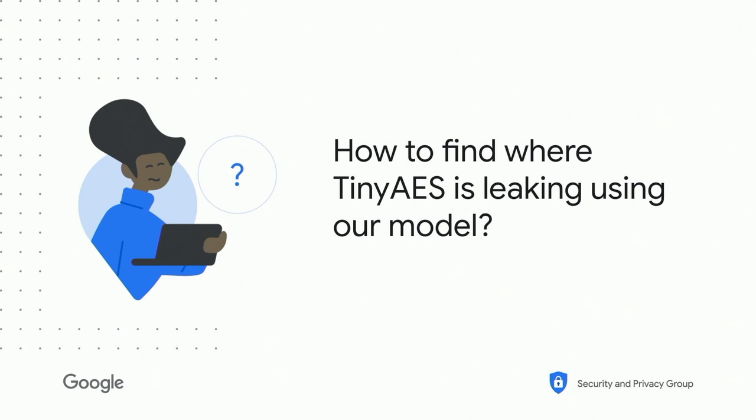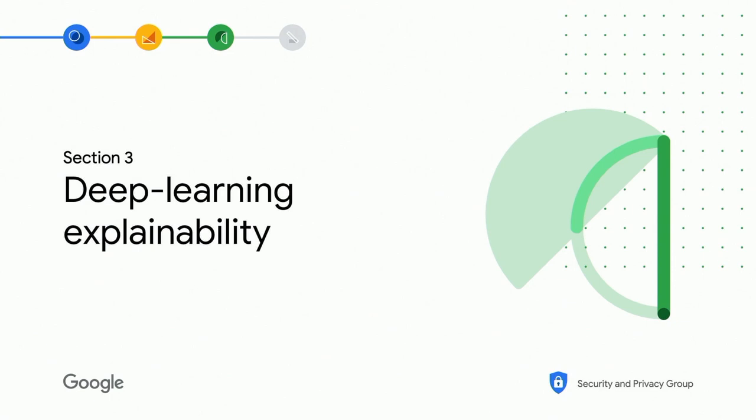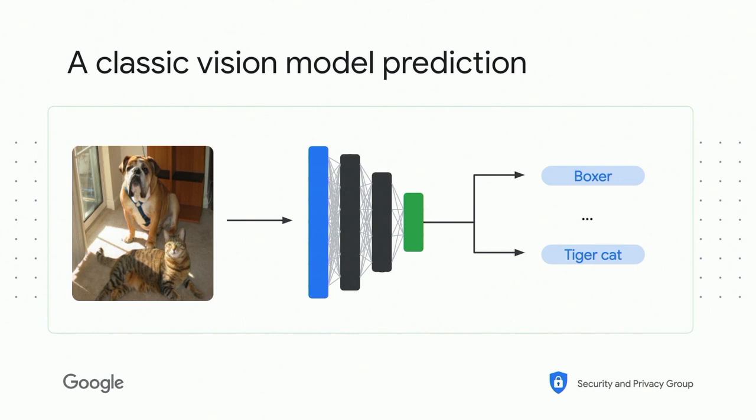Now we have a model that efficiently breaks TinyAES — the implementation is broken very badly. Can we use that to figure out where the leakage is coming from? Yes. To do that, we're going to leverage a known set of techniques called deep learning explainability. Deep learning explainability was developed for computer vision, where a model would accurately predict that an image contains a boxer and a tiger cat — but the question is: why?